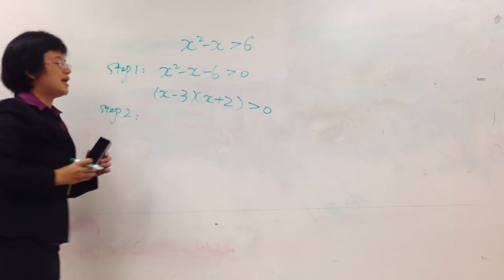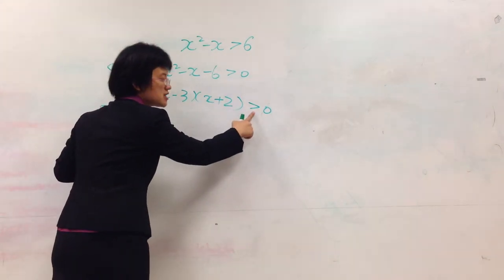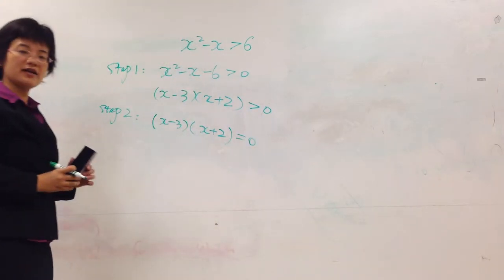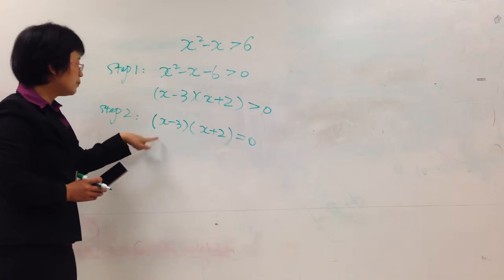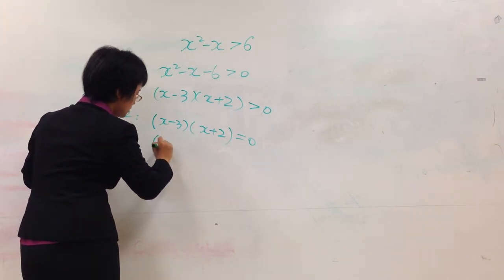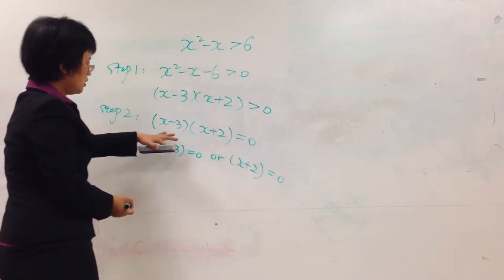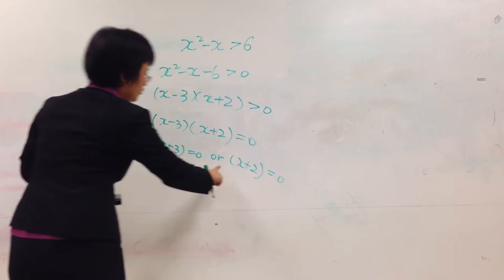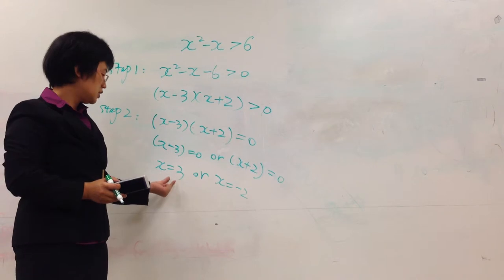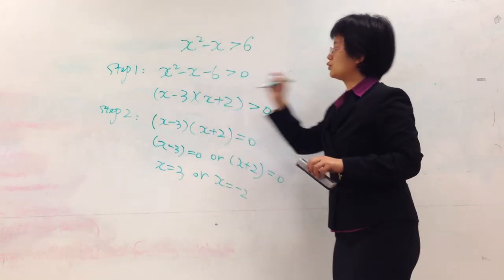Step 2: find the corresponding quadratic equation and solve it. We just change the inequality sign to an equal sign: x minus 3 multiplied by x plus 2 equal to 0. So x minus 3 equal to 0 or x plus 2 equal to 0, giving us x equals 3 or x equals negative 2. There are two solutions for this quadratic equation: 3 or negative 2.